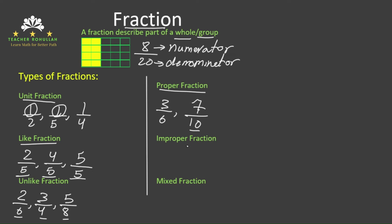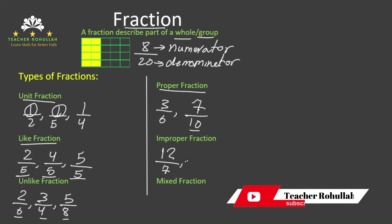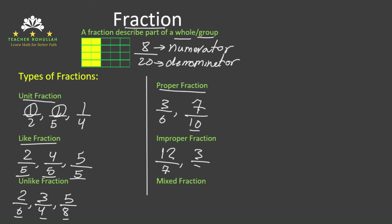The fifth type of fraction is called improper fraction. An improper fraction is a fraction in which the numerator is equal to the denominator or greater than the denominator. For example, 12 sevenths or 3 thirds. These two fractions are called improper fractions because the numerator is either more than or equal to the denominator.